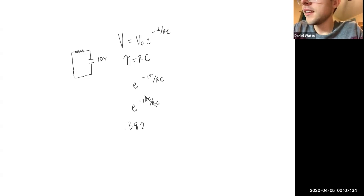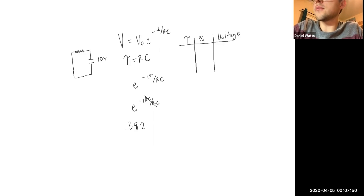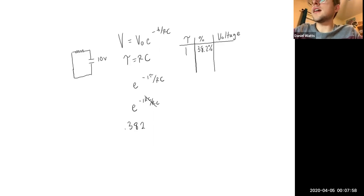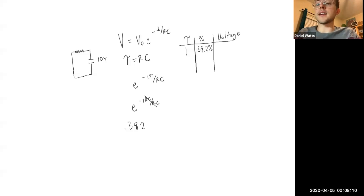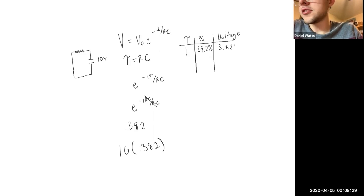So we've got our time constant, percent discharging, and voltage. At one time constant, we have 38.2 percent — and that's how much is left on the capacitor. That's a key difference: it's not how much the capacitor has pushed out, it's how much is left. So the initial voltage of 10 times 0.382 means we have 3.82 volts left after one time constant.